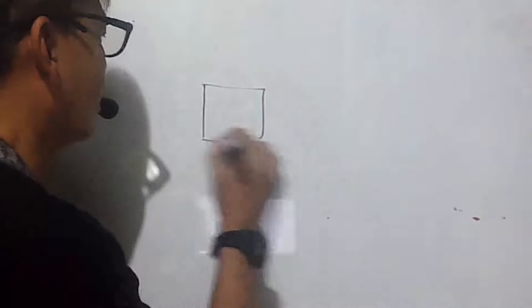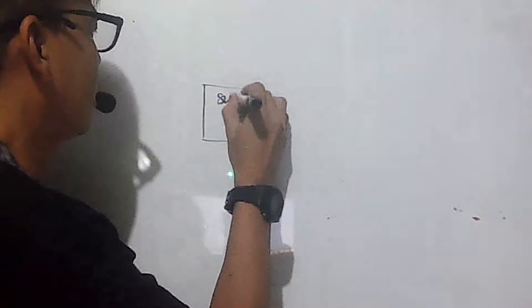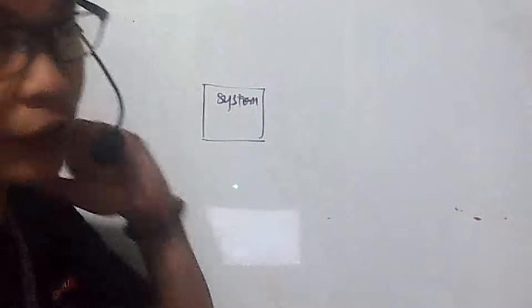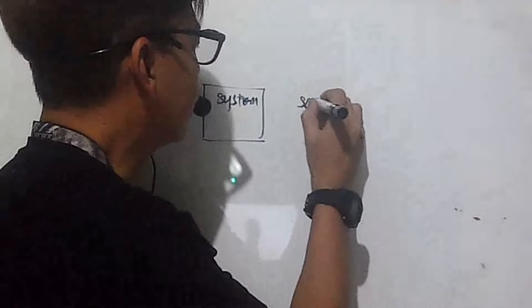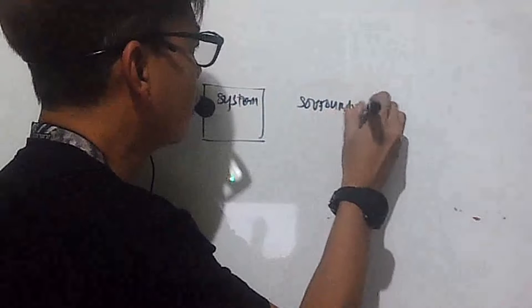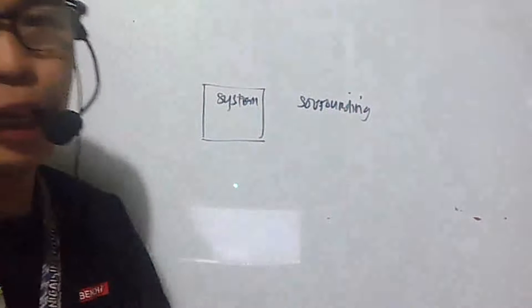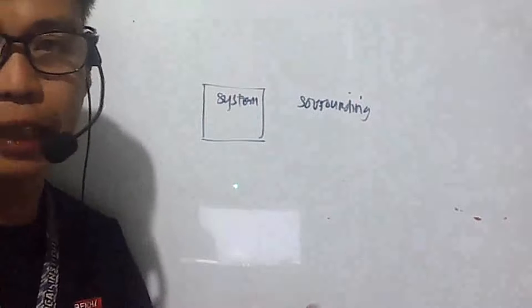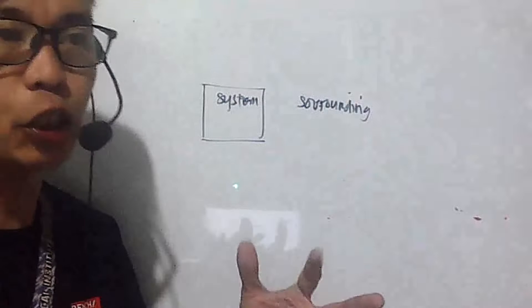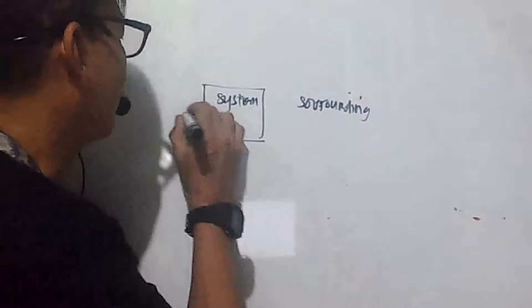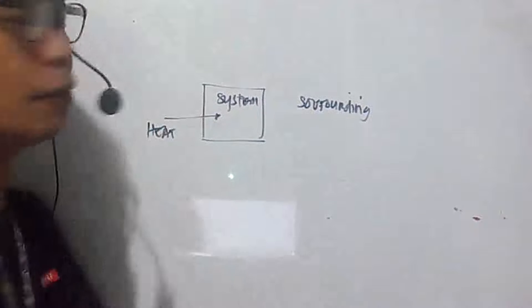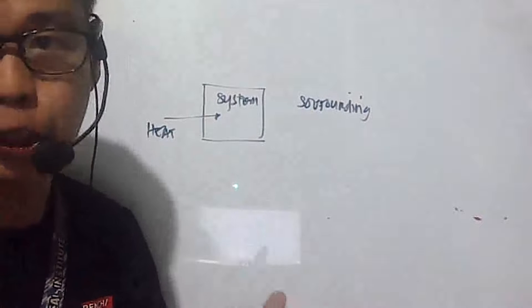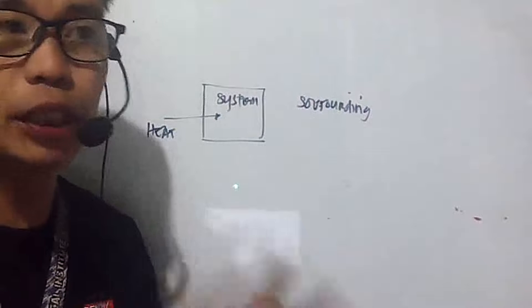Let's say this is your system — everything outside of the system is called the surroundings. Energy flows freely to the system; it's either intake or outtake, so the system can receive energy or release energy. Let's say heat is coming in — that's a form of energy entering the system.